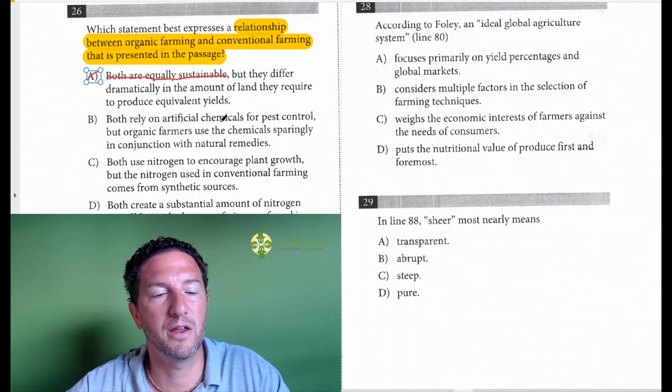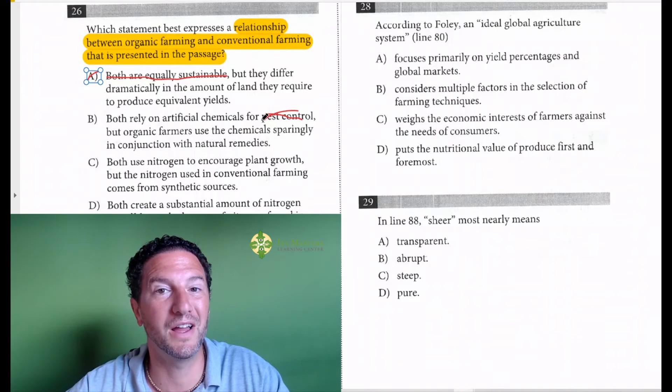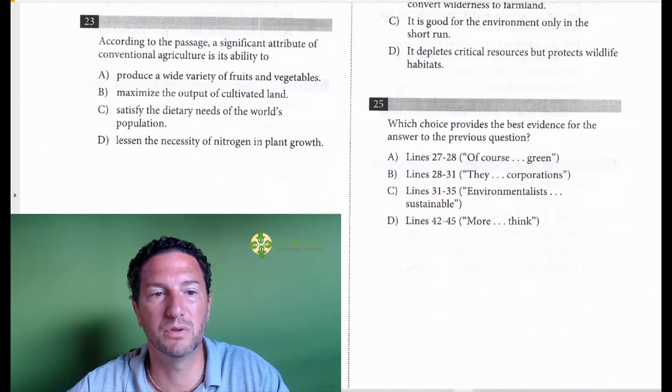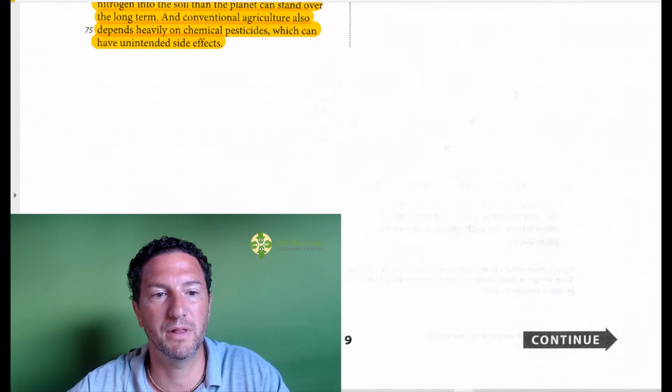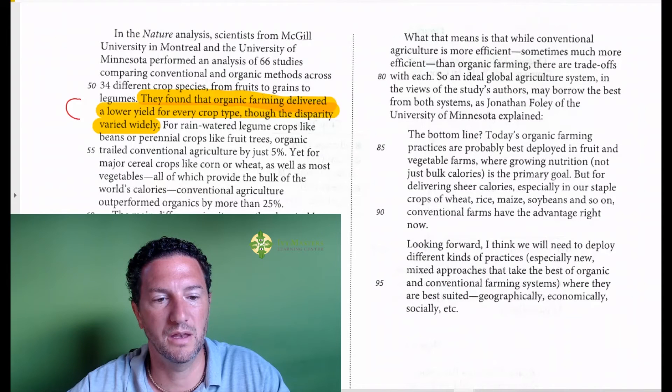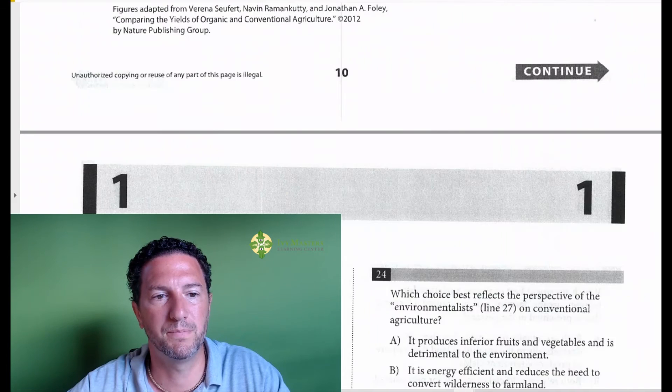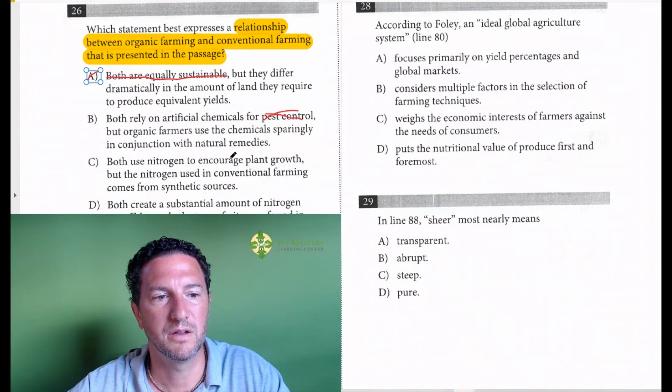Answer choice B: both rely on artificial chemicals for pest control. First of all, it's talking about pest control. It's not talking about fertilizer. It talks about fertilizer, not pest control. Second of all, it talks about organic as using cover crops to encourage plant growth. And that is answer choice D for the line reference. But basically those lines show that this is wrong.